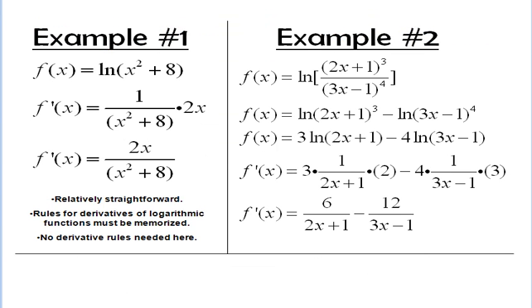We have two examples here, so first let's start with example 1. We're taking the natural log of a function, x squared plus 8, and that was the second formula that we just went over. So basically, we're going to take that function, put 1 over it, and then multiply it by the derivative. So the derivative of x squared plus 8 is 2x.